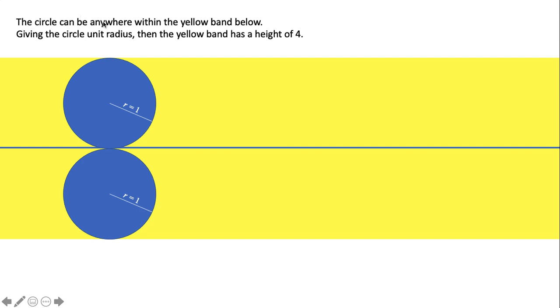So the circle can be anywhere within the yellow band below for the line to intersect it and call it a chord.